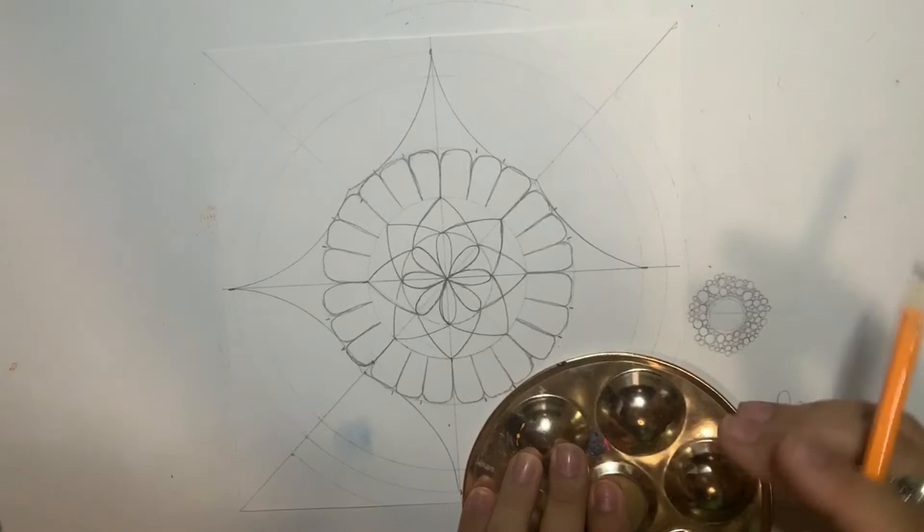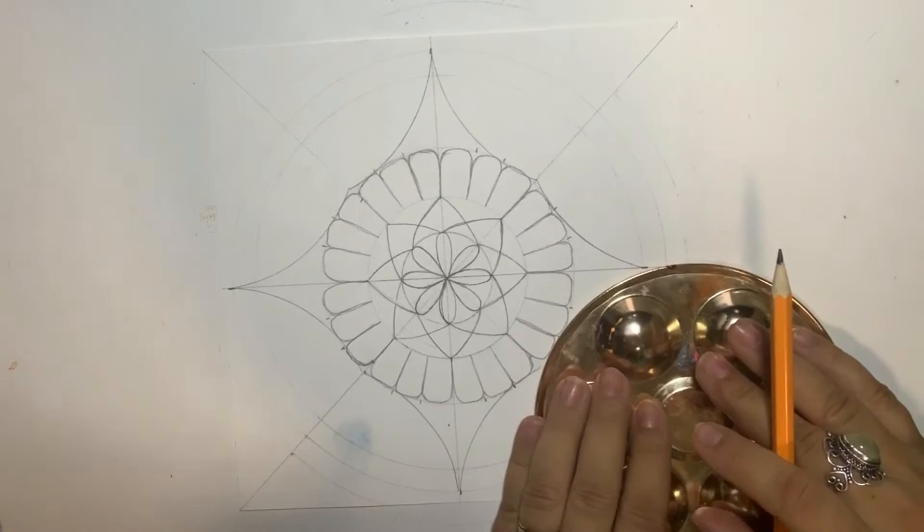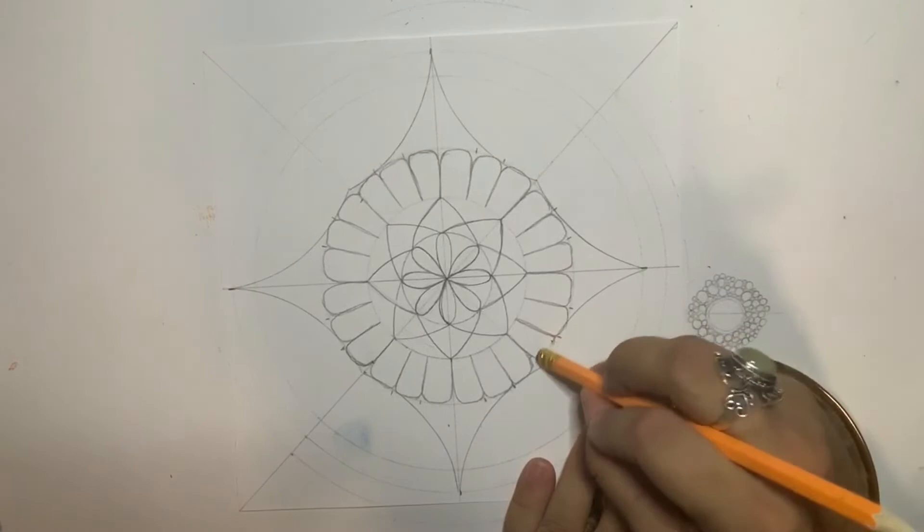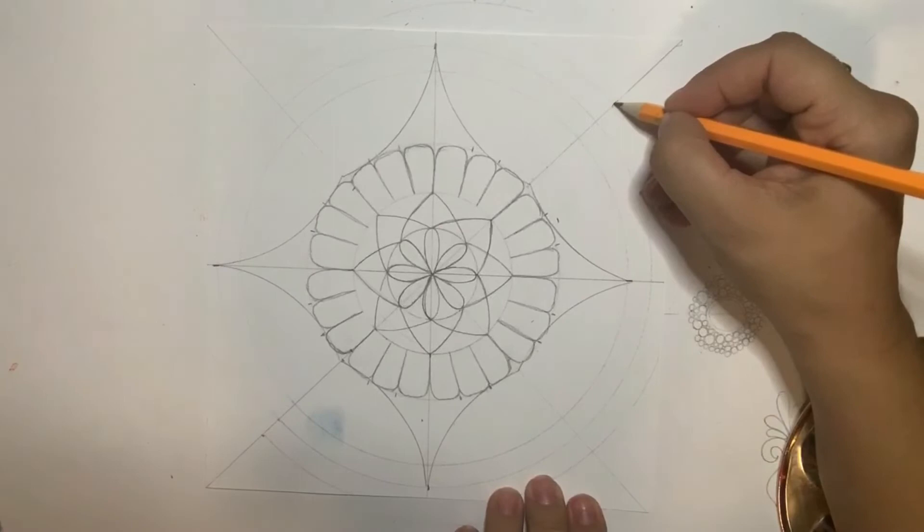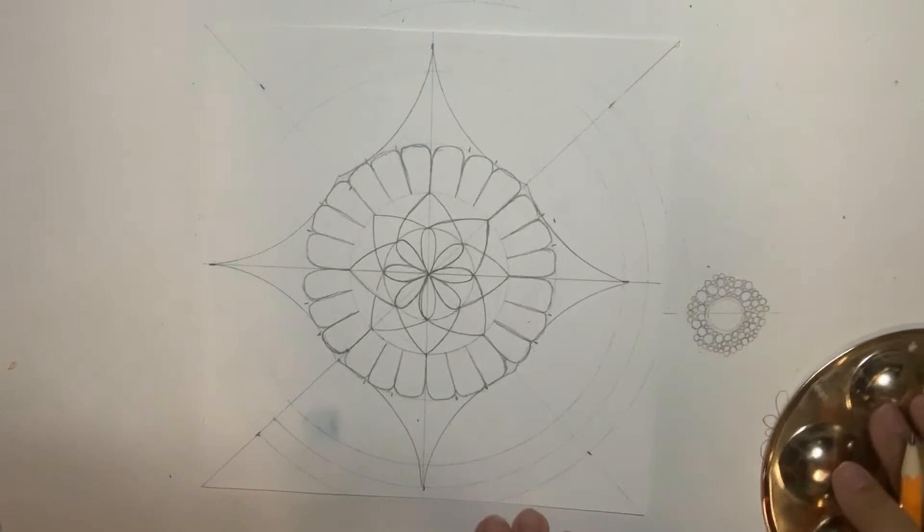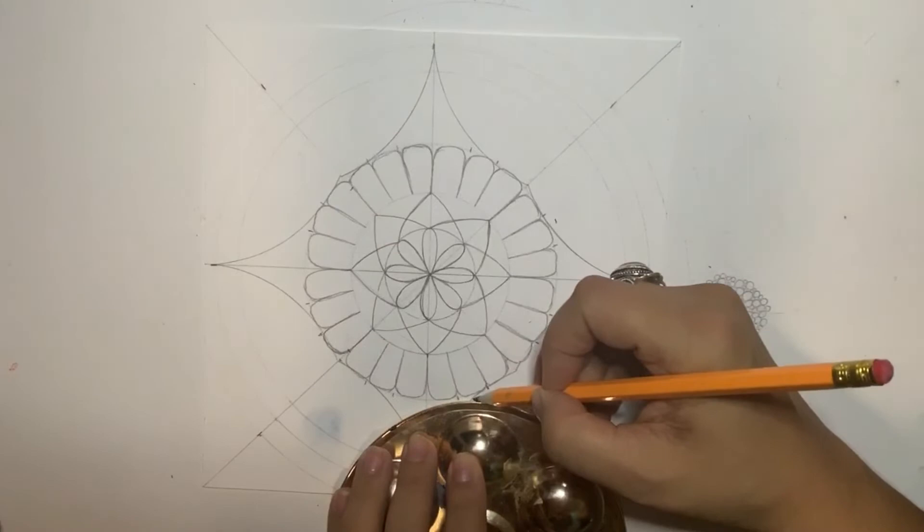As you can see, it's like a four-point star. Well, I over-sketched here over the petal but it's fine. Then I'm going to make these north, east, south, and west marks, and then I'm going to make half a star.